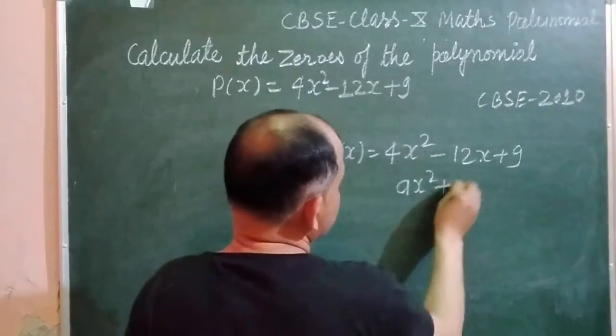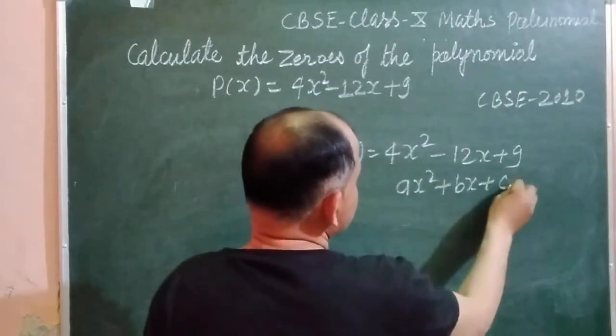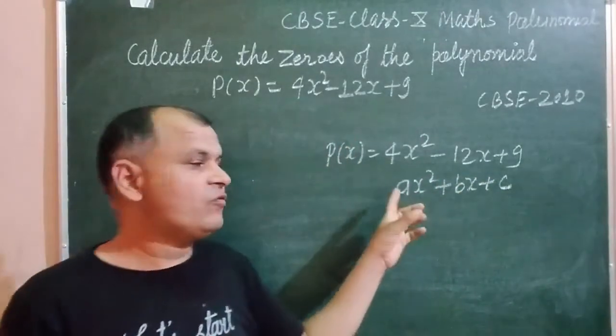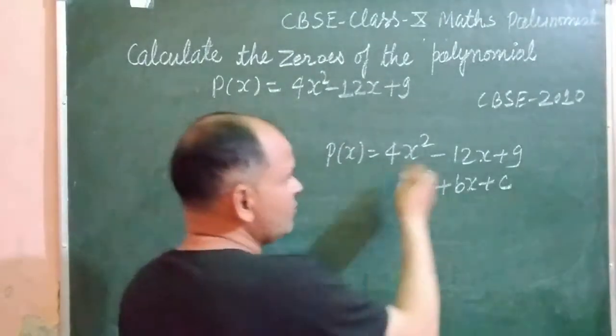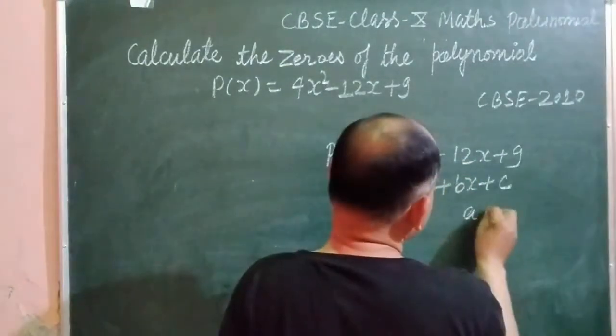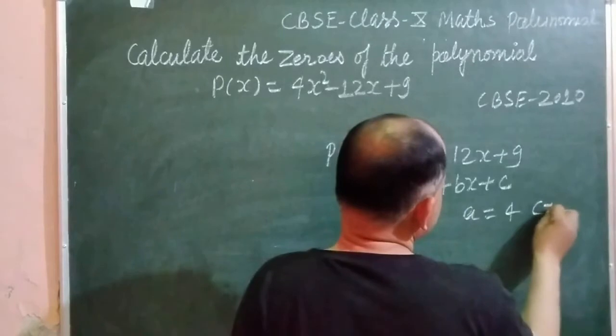It is of the form ax² + bx + c. So first we make multiplication of a and c to find b. So here a is 4 and c is 9.